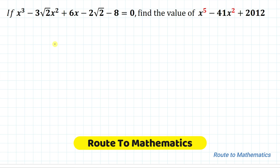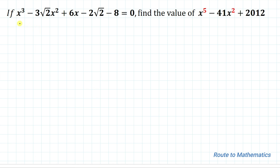Hello everyone, welcome to Root 2 Mathematics. In this video we are going to solve this interesting column-paired question. The given question is: if x³ - 3√2·x² + 6x - 2√2 - 8 = 0, then find the value of x⁵ - 41x² + 2012.